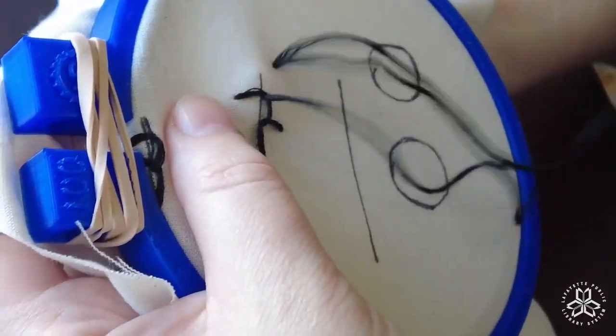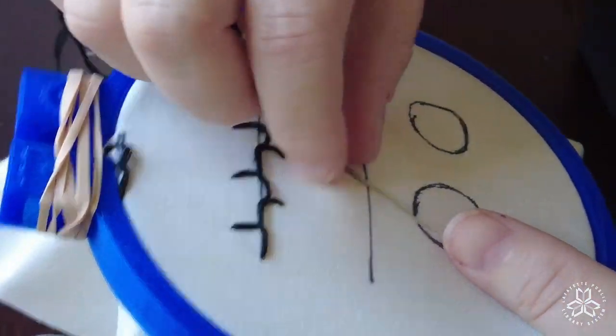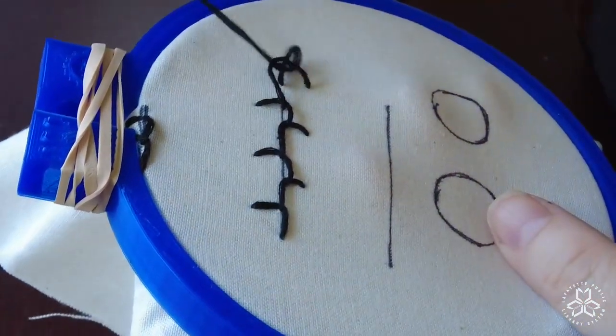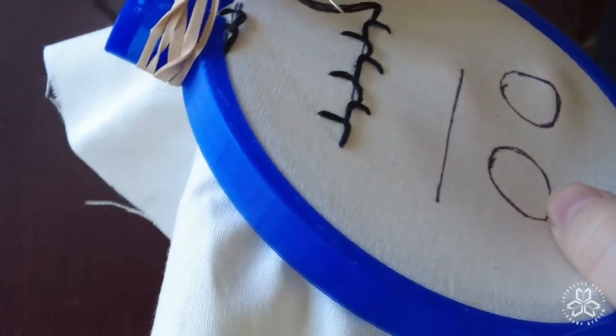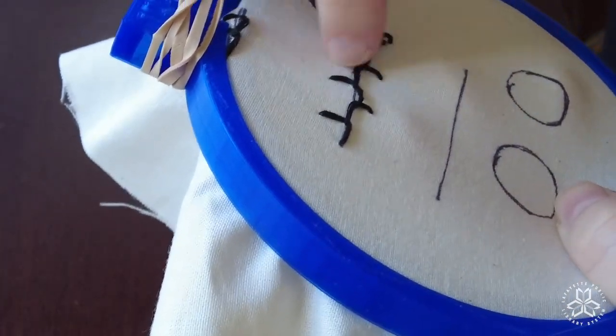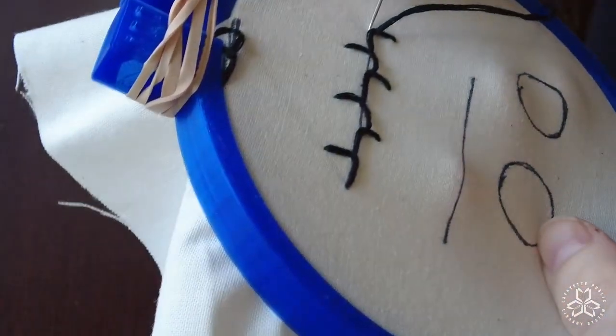When you get to the end of your line, we're going to do one more. When you get to the end of it, you just put it through the end and then do a little tack down stitch.